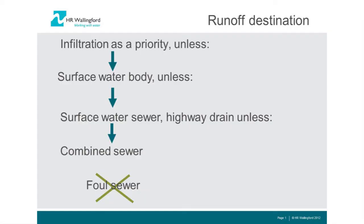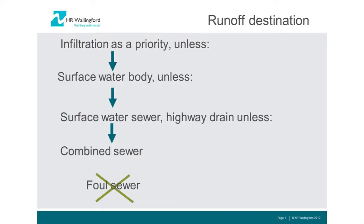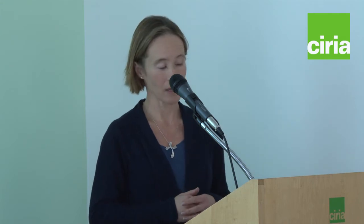After infiltration, the next priority is surface water drainage systems. Subsurface infrastructure is a lower priority, and you need to demonstrate why water needs to go into a receiving sewer — it's likely to have much more limited capacity, be less adaptable to climate change and urban creep, and have maintenance issues. Connection to a combined sewer is a last resort due to associated CSO spill risks, and a foul sewer is absolutely not allowed.